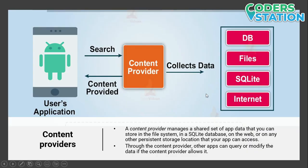The last component is Content Providers. A content provider manages a shared set of app data that you can store in the file system, in an SQLite database, on the web, or on any other persistent storage location that your app can access. Through the content provider, other apps can query or modify the data if the content provider allows it. For example, the Android system provides a content provider that manages the user contact information, so any app with the proper permission can read and write information about a particular person.